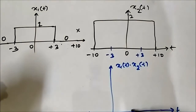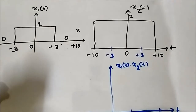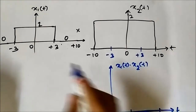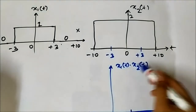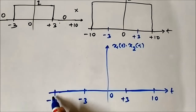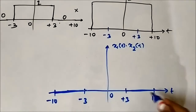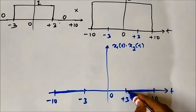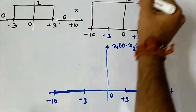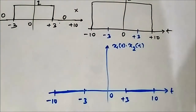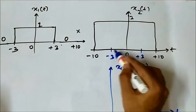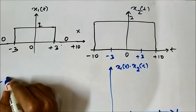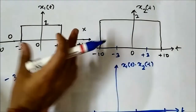So in the output, from minus 10 to minus 3 and from plus 3 to plus 10, the value is 0, because one of the signals is 0 and anything multiplied with 0 is 0. Now from minus 3 to plus 3, x1(t) has a value of 1 and x2(t) has a value of 2.